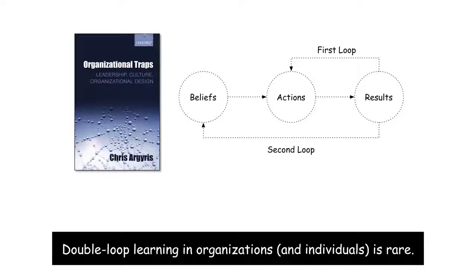We're relatively willing to change our actions or behaviors based on feedback — we try something that doesn't work, we try something different. That first loop is pretty active. But we're remarkably resistant to changing our beliefs based on feedback. We ignore it, come up with excuses and explanations, and don't even see what's going on.